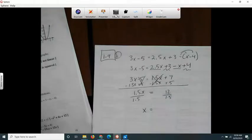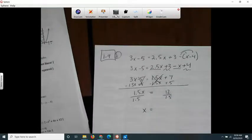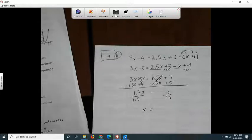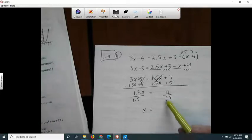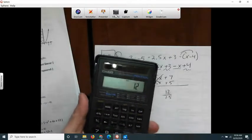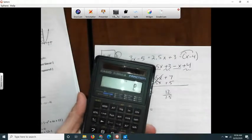So 12 divided by 1.5. That's the same as saying, what times 1.5 would be 12? I think it's 8. I'm going to divide it though. It's 8.